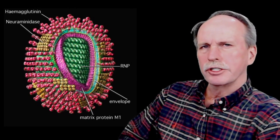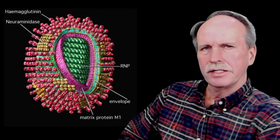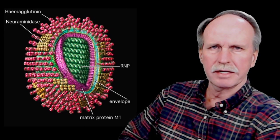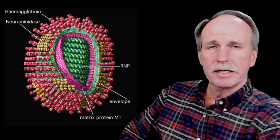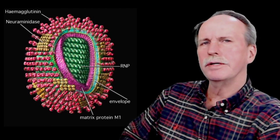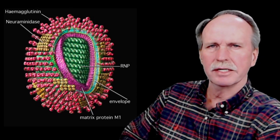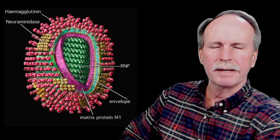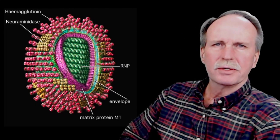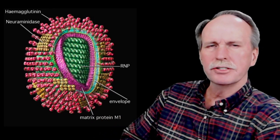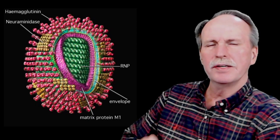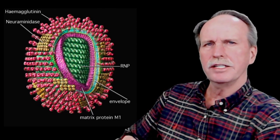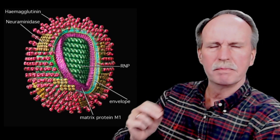The United States declared war on Germany in April 1917 and started a draft of eligible young men in June of 1917. By the time Dr. Loring Minor made the first reports of what appears to be the earliest cases of Spanish influenza in Haskell County in mid-February 1918, that draft was well underway. Young men from Haskell County were either drafted or volunteered for service in the Army and reported to Camp Funston, which is near what is now present-day Fort Riley in Kansas, in the first week of March 1918.